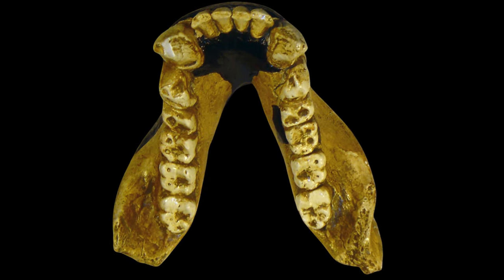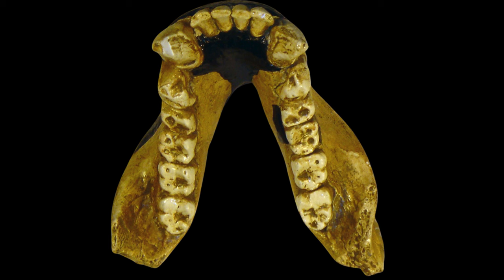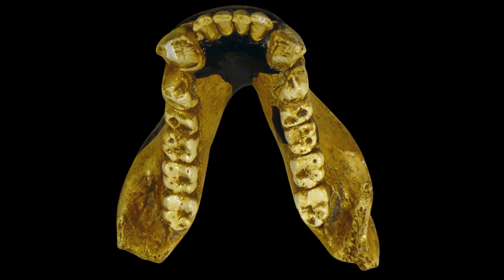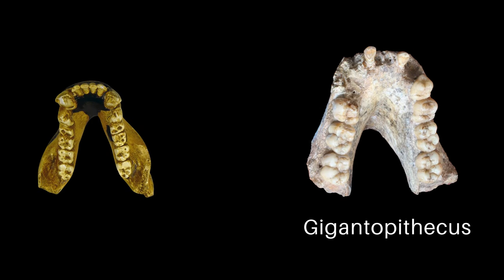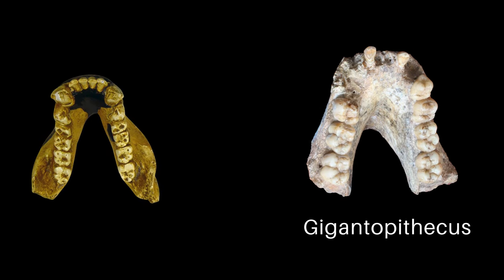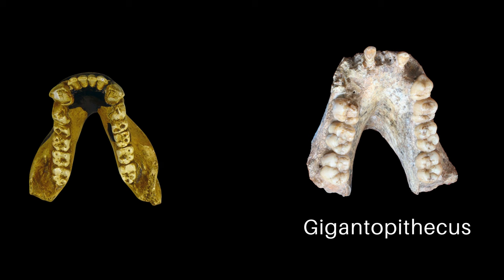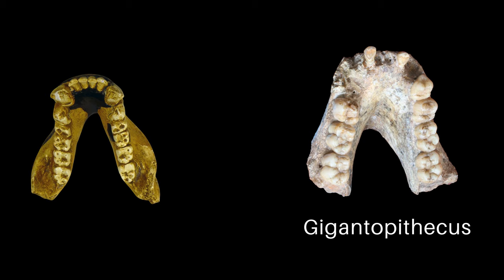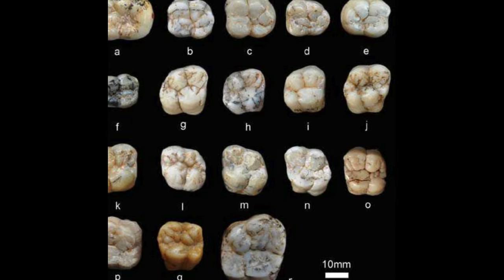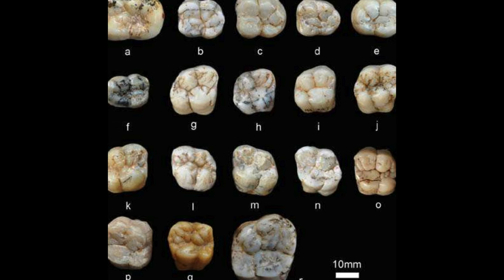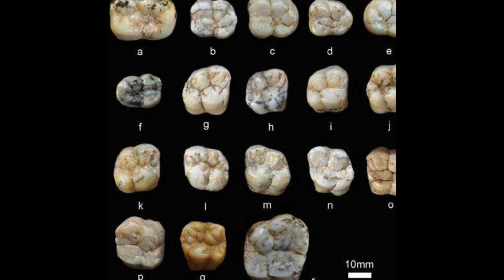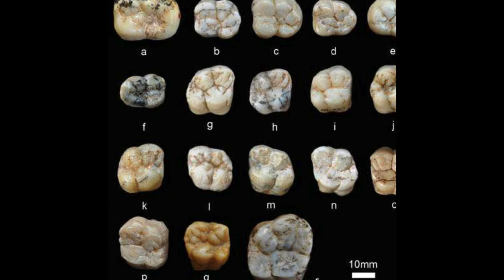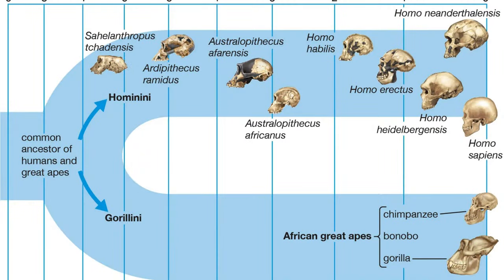Thick enamel, previously thought to be a unique trait linking Ramapithecus to humans, was found in other Miocene species from Asia and Europe, including Gigantopithecus. This trait was also present in modern orangutans, unlike African great apes. Researchers concluded that thick enamel was an ancient characteristic, not a unique human trait. With these new insights, the molecular clock method was fully accepted, and the fossil tree of human evolution was redrawn.